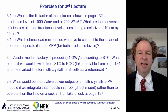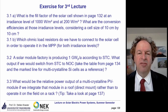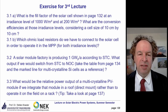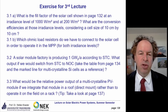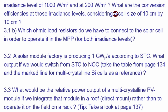We come to the exercise for the third lecture. The first question was: what is the fill factor of the solar cell shown at page 132? This was the page with the various IV curves with different illumination levels. It asks the fill factor for 1000 W/m² and 200 W/m². Also asked was the conversion efficiency at those irradiance levels, considering a cell size of 10 by 10 centimeters. And which ohmic load resistors have to be connected to operate them at the maximum power point (MPP).